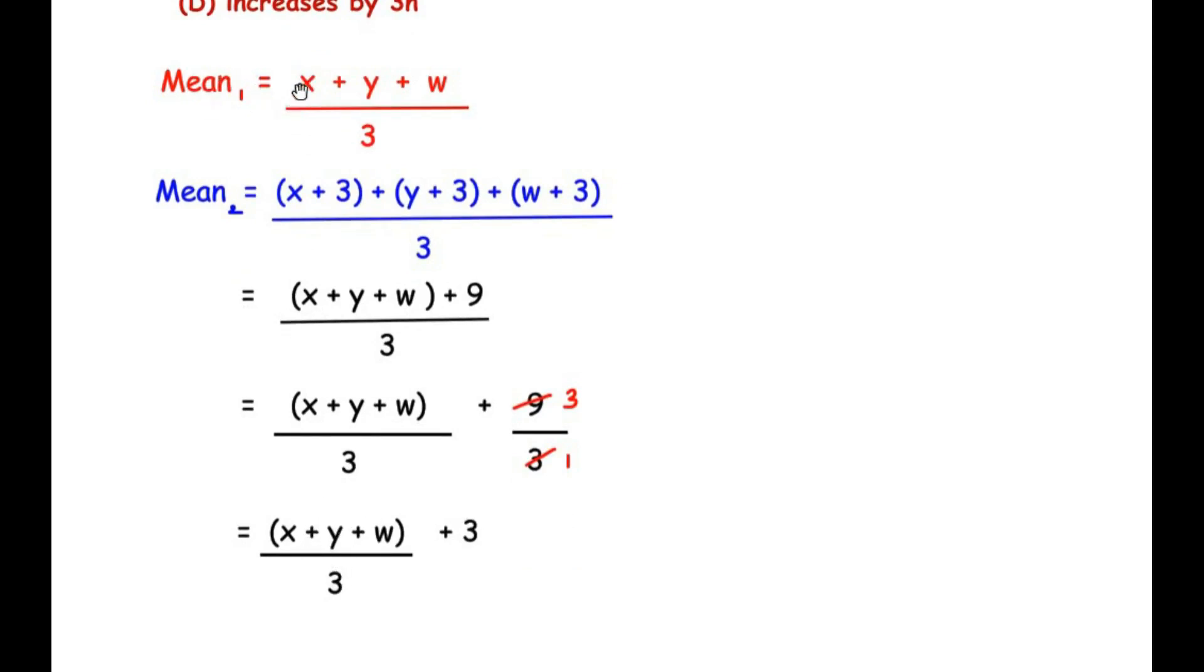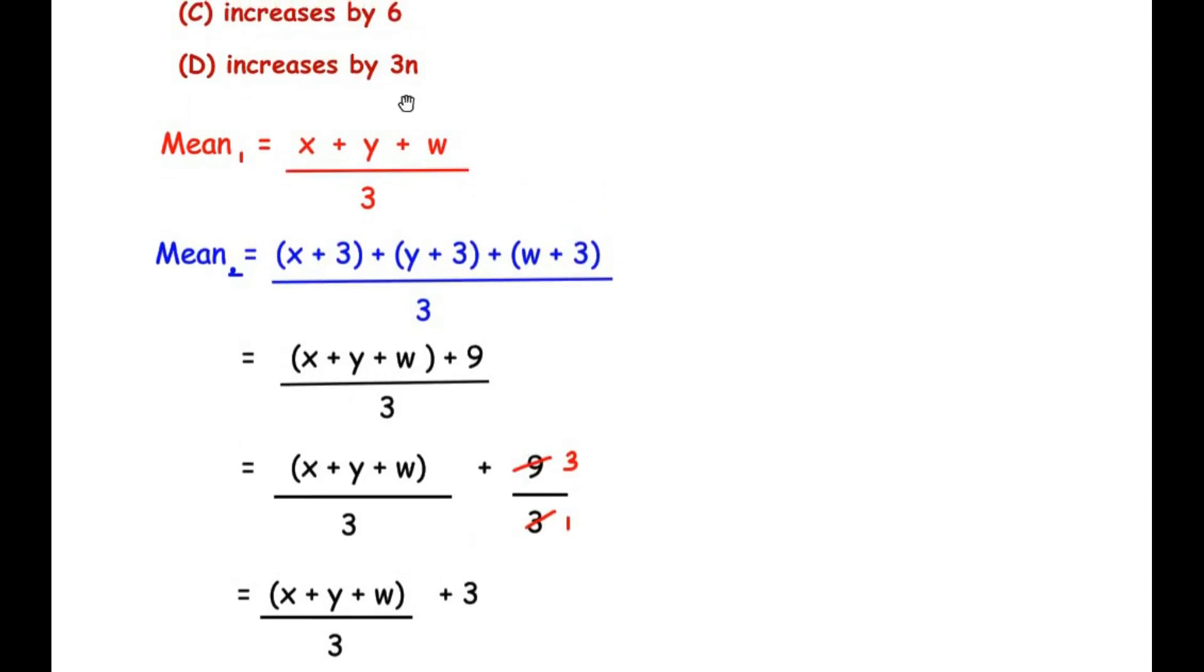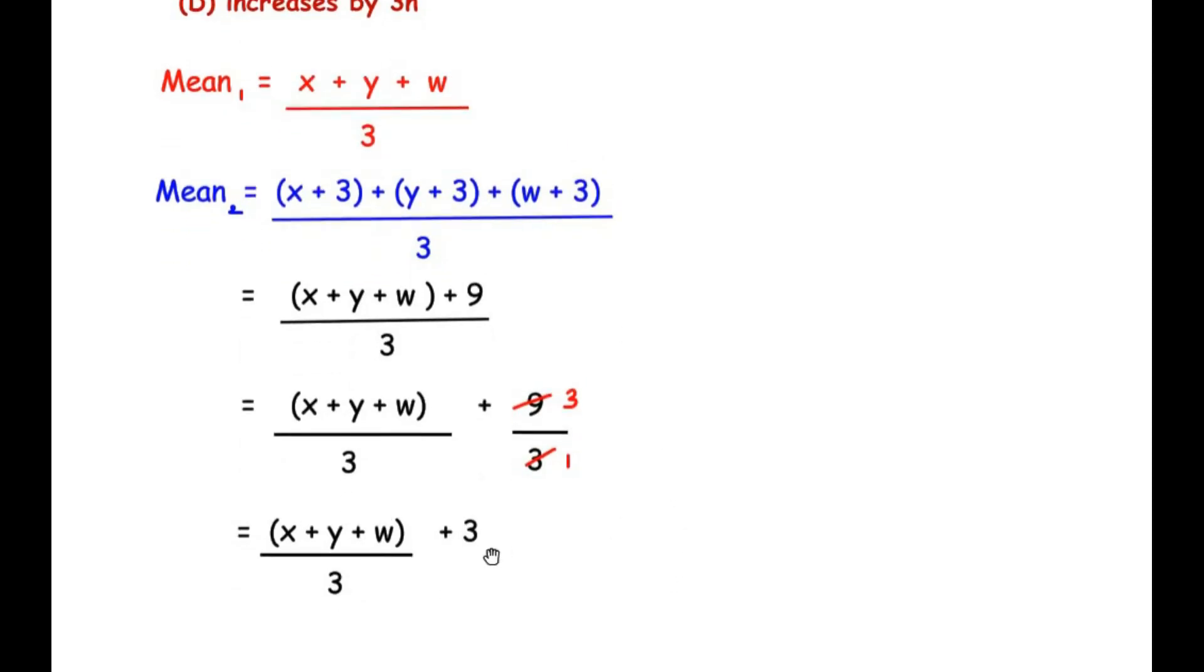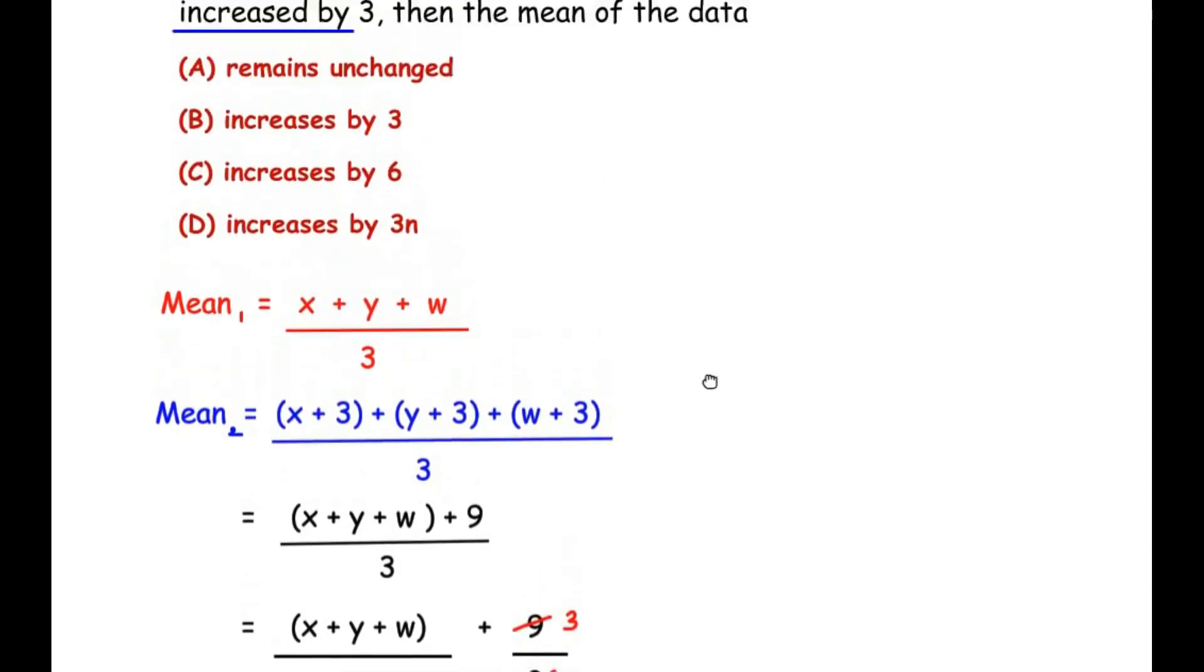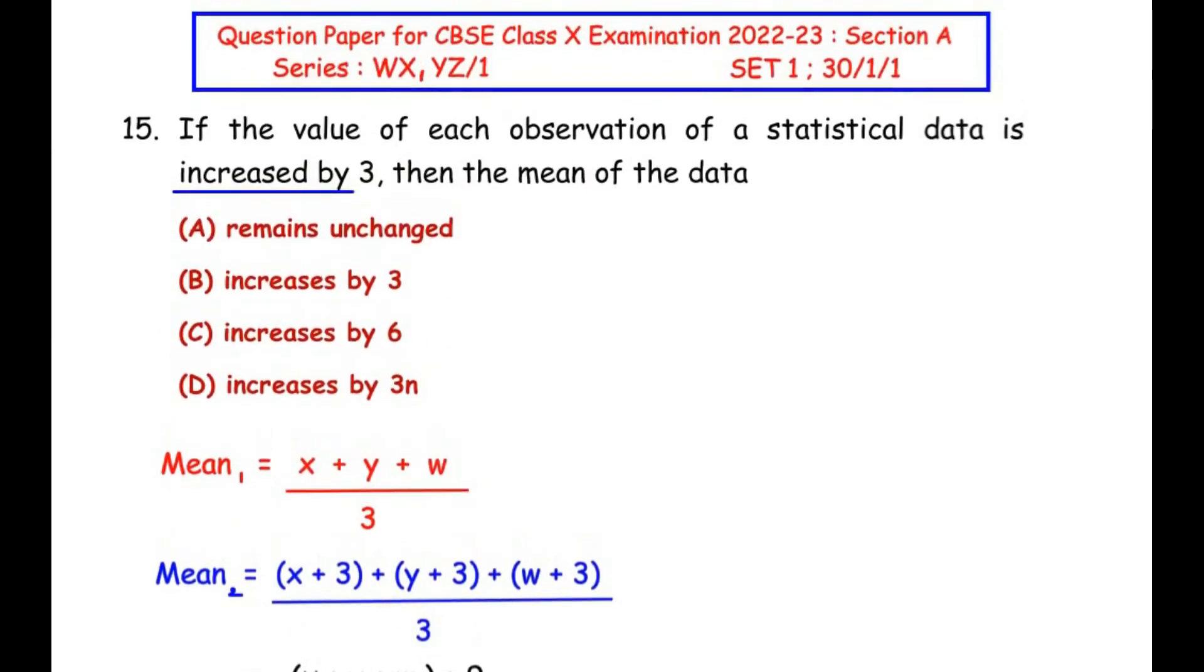Now you can take 4 number of observations, 5 number of observations, and also check that every time it is going to increase by 3, not by multiples of 3, but just by 3. So here our option is going to be increases by 3, that is option B.